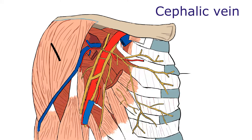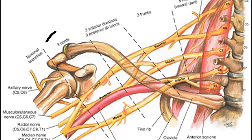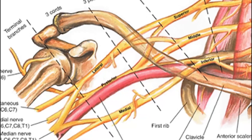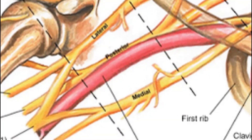Moving on to the contents now — remember triple C for cephalic vein, coracoclavicular ligament, and the cords of the brachial plexus, which are lateral, posterior, and medial.